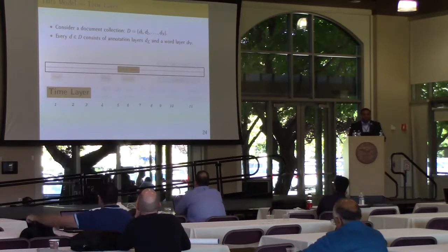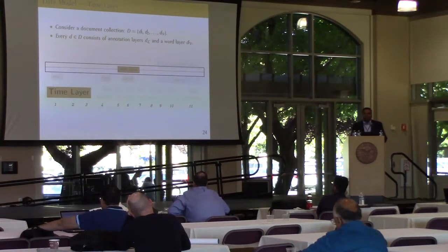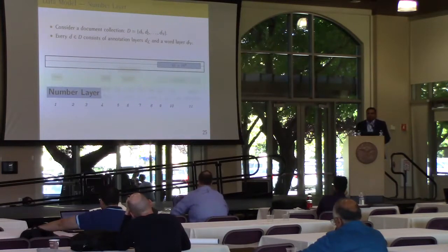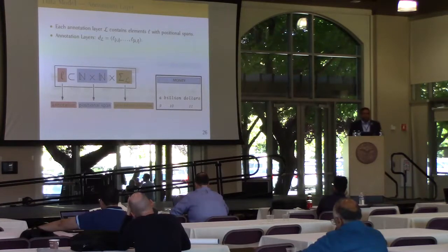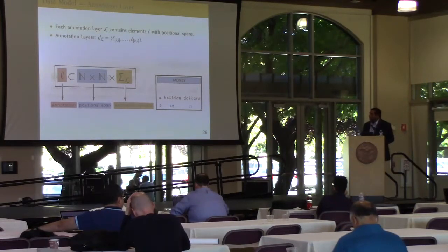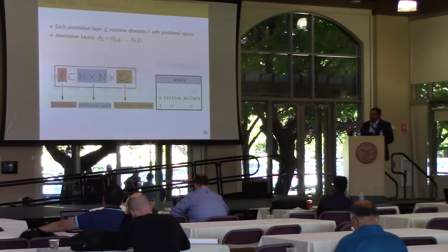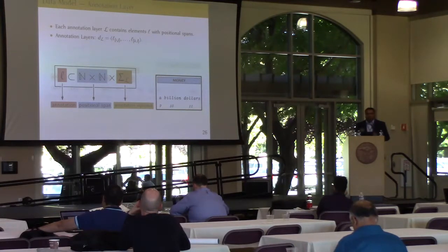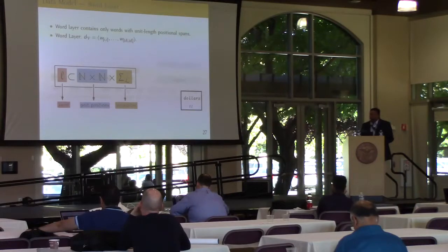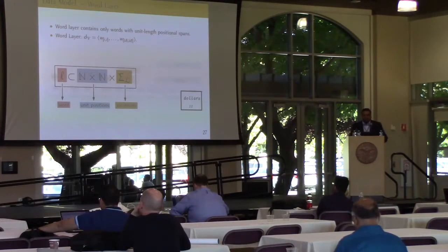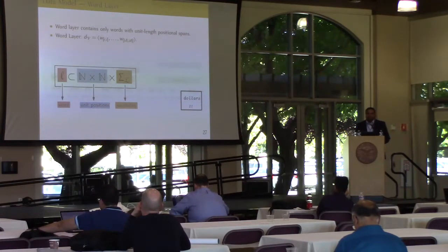On top of the named entity layer, we have a time layer containing resolved values for date and time named entities as crisp time intervals, and a number layer with resolved values for numerical expressions such as money and percentages. Each element in a layer is modeled with a positional span marking the annotation in the word sequence—for instance, a named entity tagger tags 'a billion dollars' at positional span 9 to 11, with annotation type money. Words are a special case, modeled as unit-length spans, e.g., position 11 to 11 for the word dollars.